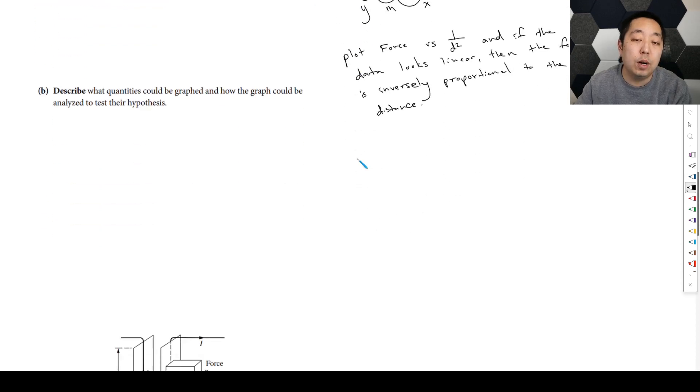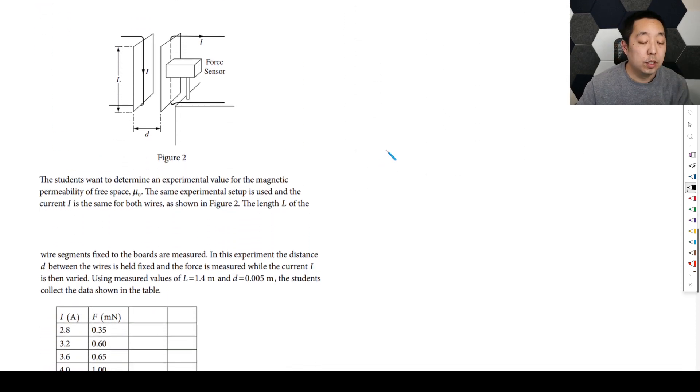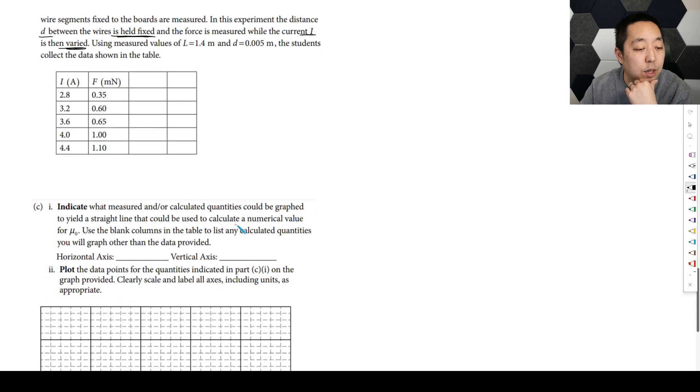Okay, so now we're on to the analysis portion of the experimental design. So they're going to give you a setup. They want to determine the experimental value for the magnetic permeability of free space mu naught. The same experimental setup is used. Sometimes they vary it, but sometimes it can be pretty much the same. And the current I is the same for both wires. The length L of the wire segments fixed to the boards are measured. In this experiment, the distance D is held fixed. So here they're not varying the distance. And the force is measured while the current is varied. So they're going to vary the current here. We're going to measure this guy here and collect the data shown below.